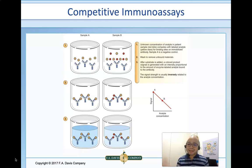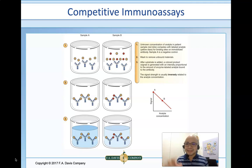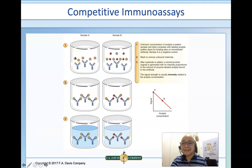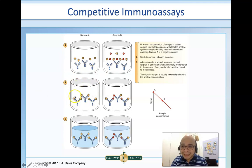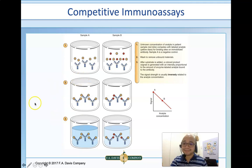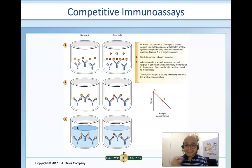In Sample A, since there is limited or absent thyroid hormone from the patient, the yellow labeled T4 — which is labeled with a radioisotope and is part of the reagent — is able to bind with the antibody binding site. Hence, that is detectable. So we can actually detect that particular binding.